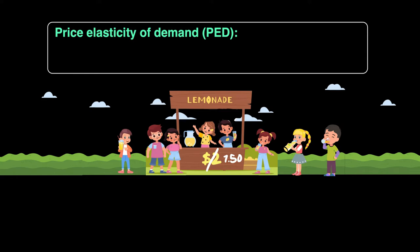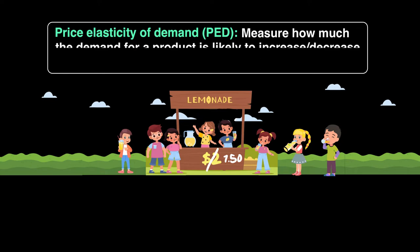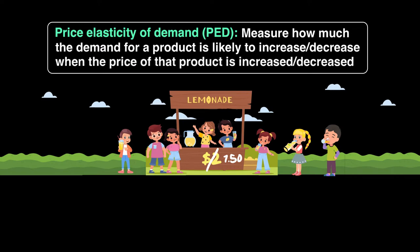This relationship is what price elasticity of demand explains — it measures the responsiveness, or the likelihood of an increase or decrease in demand for your product when the price is either increased or decreased. When price goes down, quantity demanded goes up, and the reverse is also true.